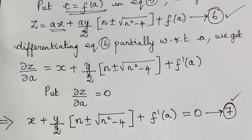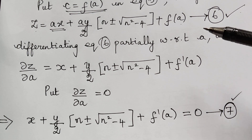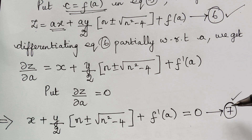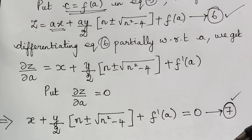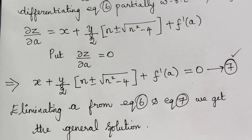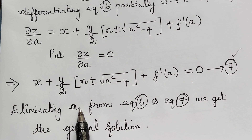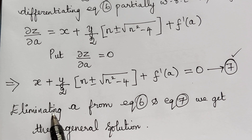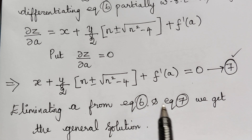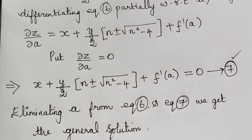We can complete the problem by eliminating a between equation 6 and equation 7 to arrive at the general solution. So hope you have understood how to solve the problem when it is of the type f(p, q) = 0. We will solve more problems on this topic in our future videos. Thank you.